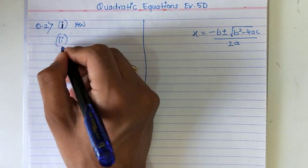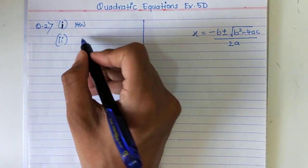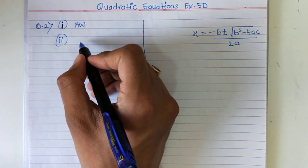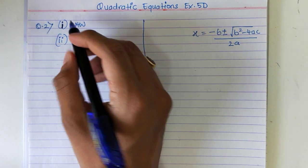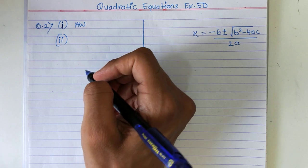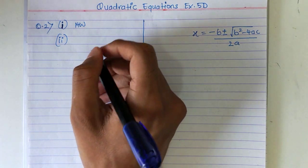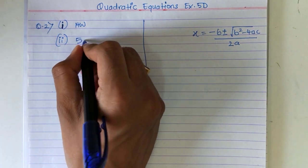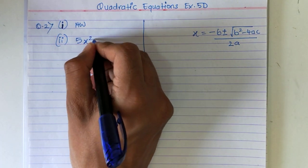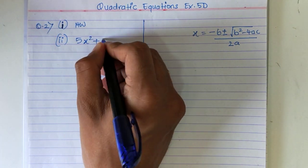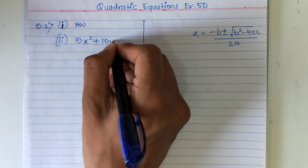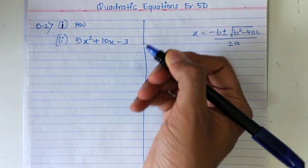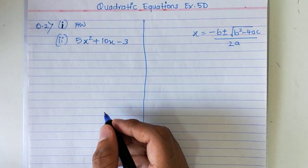First pay attention on the second one. Once you complete the second one, pause the video and try the first question also. The second question says 5x squared plus 10x minus 3.